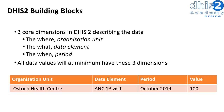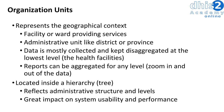Let's discuss these three dimensions a bit more. In DHIS2, organization units represent the geographical context. As an example, this can be the facility or ward providing services in a health system, or it can be administrative units like a district or province. Typically, data is collected at the lowest level organization units available — in a health system, this might be the health facilities.